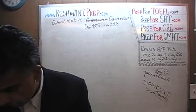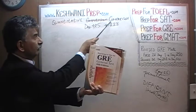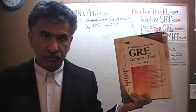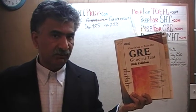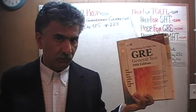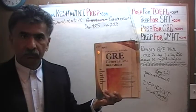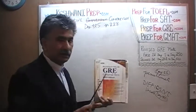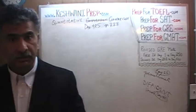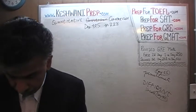Right now we are in the process of solving some quantitative comparison questions from day number 401. We are on page number 228 of this book, the 10th edition of the General GRE. Let's turn to it — page number 228, problem number 13 is what we are about to do.